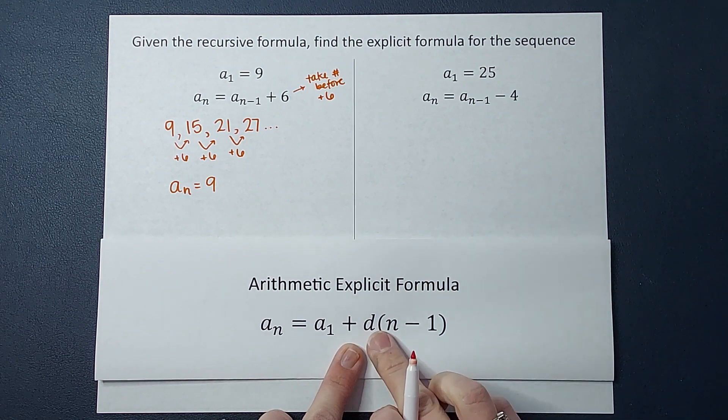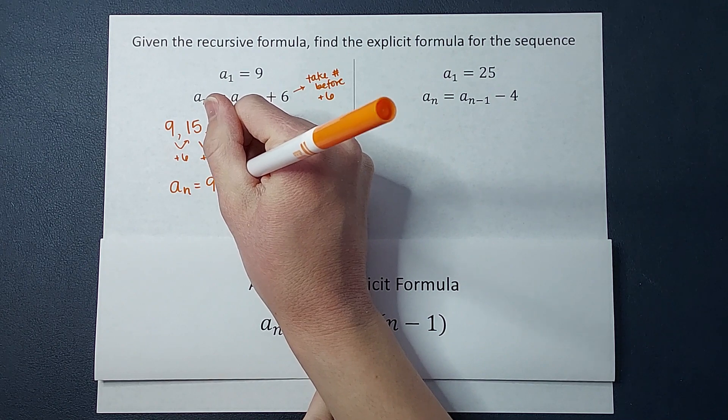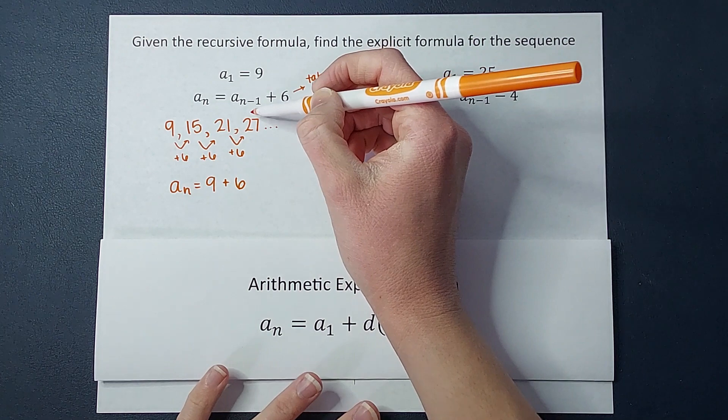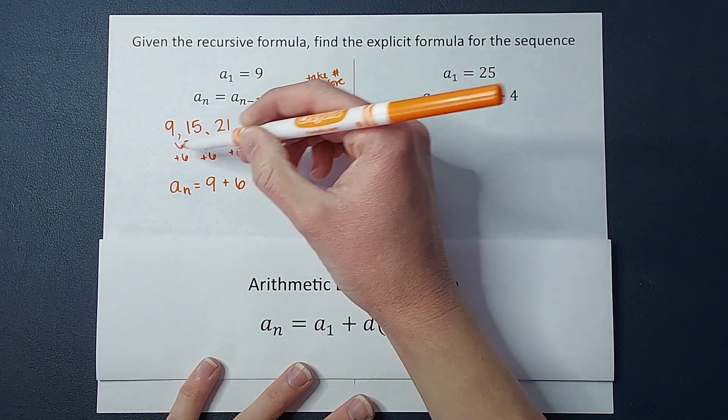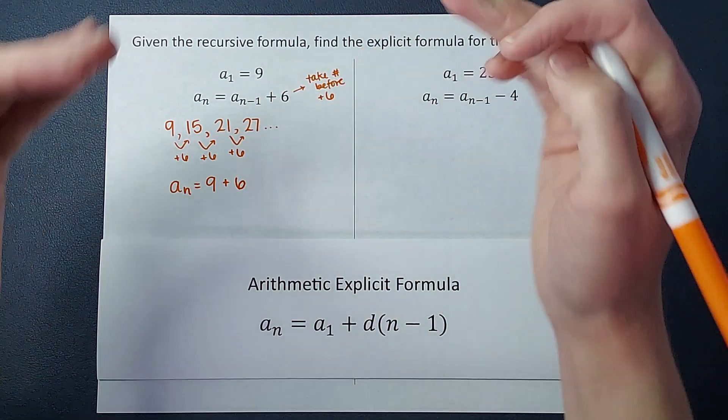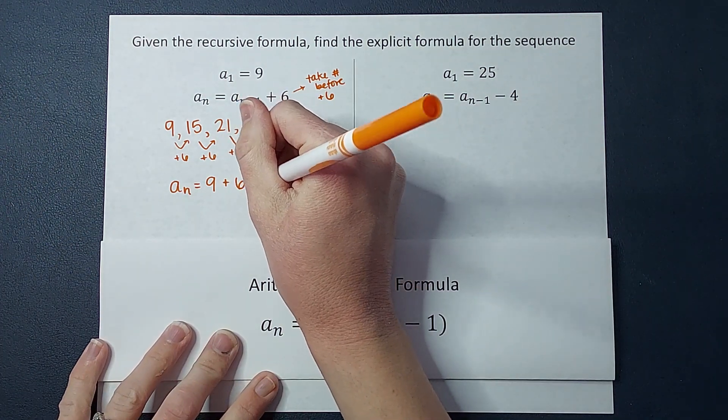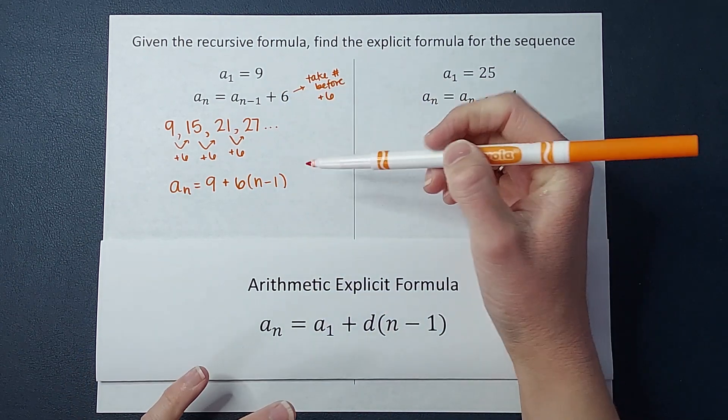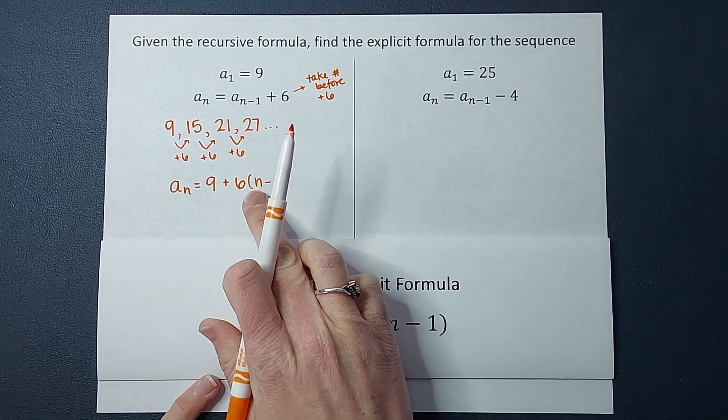And then what did we do each time? What's the common difference? Well we added six. But how many times? Well you'll notice to get the fourth term, how many times did I add six? I added it three times. To get the third term I added six twice. So one less than whatever place we want. That is where the n minus one comes in. n minus one. So if I wanted to know the hundredth term I would need to add six 99 times, n minus one.